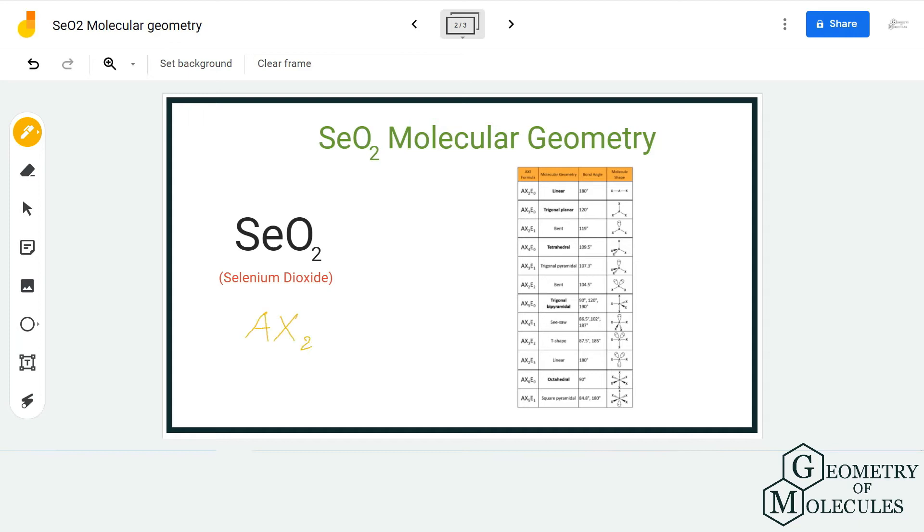Here, the AXN notation will be AX2E1, because there are two atoms of oxygen forming bonds with the central atom and there is one lone pair of electrons on the selenium atom. So it would be AX2E1.